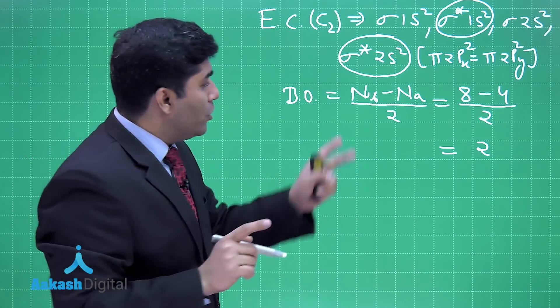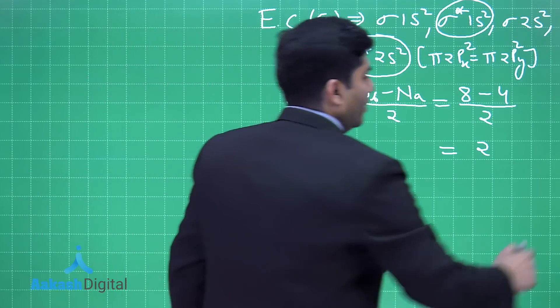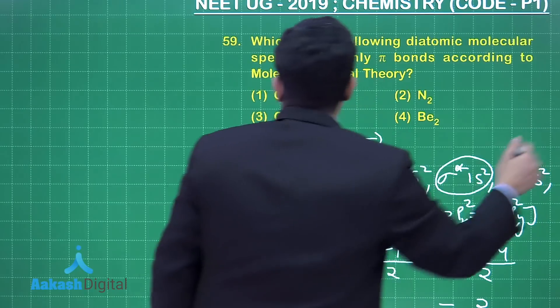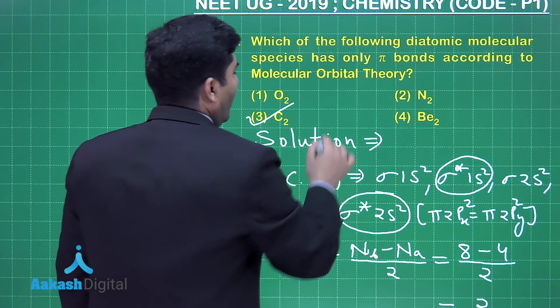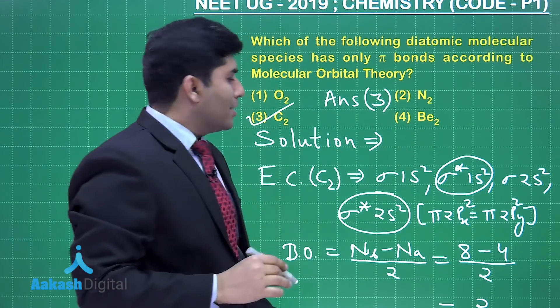...are present in π2px and π2py. If the electrons are in π2px and π2py, the nature of these bonds will be pi bonds. So our answer is option 3.